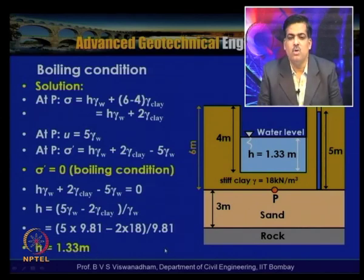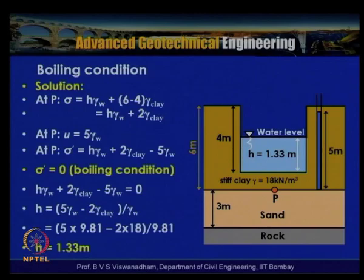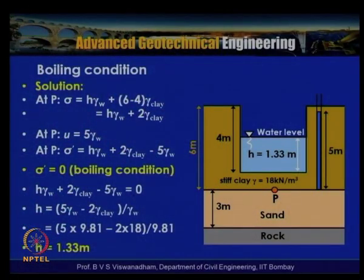If we are able to maintain the height of water in the fill at least 1.3 meters minimum, we can avoid the boiling condition. For example, if by mistake the excavation has happened and there is anticipation of some boiling condition, one of the immediate remedies is to fill the trench with water to prevent caving of the excavation.